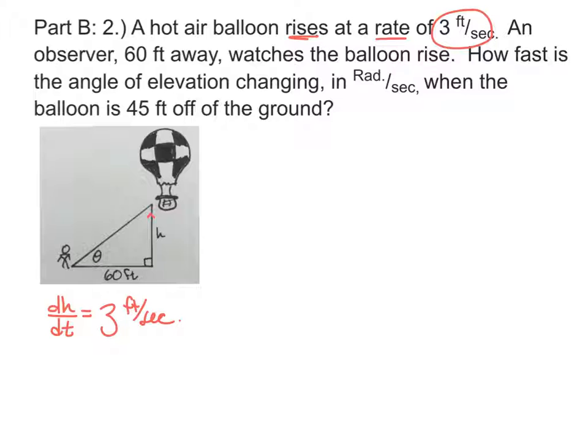As we continue through, an observer is 60 feet away. Well, that's already in my picture and that value is staying the same. The observer isn't moving, so that value stays constant. But they watch the balloon rise. How fast is the angle of elevation changing? So the angle of elevation is theta. And that's what we want to find out is how fast theta is changing with respect to time. And that's what we don't know.